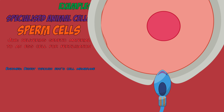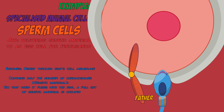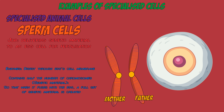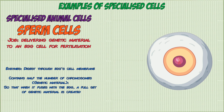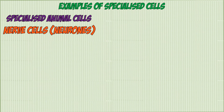The sperm head contains enzymes that digest through the cell membrane of the egg cell to help fertilize it. The sperm cell only has half the amount of genetic material compared to normal body cells, because it combines with the egg cell — which also contains half the genetic material from the mother — to form a new cell with a complete set of genetic material for a new organism.